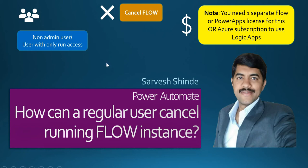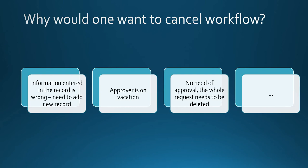Let's understand why a user might want to cancel the flow. It might be possible that he entered some wrong information in the record and wants to delete it and start over, or the approver is on vacation so the flow is stuck and the user wants to cancel it and assign it to someone else. Or the end user might have already taken the approval offline and wants to cancel the process.